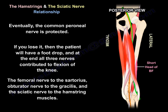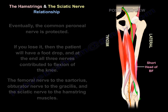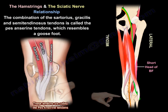The common peroneal nerve is protected. If you lose it, the patient will have foot drop. All three nerves contributed to flexion of the knee: the femoral nerve to the sartorius, the obturator nerve to the gracilis, and the sciatic nerve to the hamstring muscles. The sartorius, gracilis, and semitendinosus together form what is called the pes anserinus tendons, which resembles a goose foot.